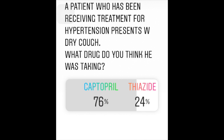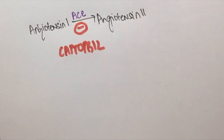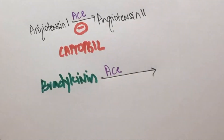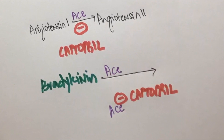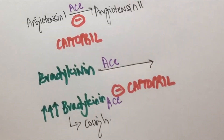A patient who has been receiving treatment for hypertension presents with dry cough. What drug do you think he was taking? Captopril and thiazides are both antihypertensive drugs. Captopril is an ACE inhibitor and thiazide is a diuretic. Angiotensin converting enzyme breaks bradykinin down. Captopril blocks this enzyme, which results in an increase in bradykinin, and this increase in bradykinin results in dry cough.